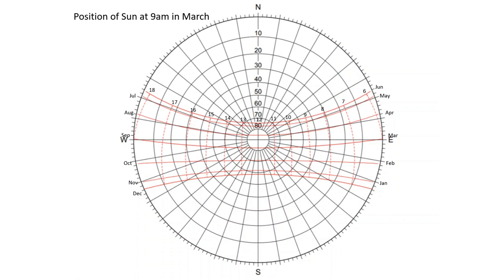Now let's see how to find the position of the sun at 9 am in March. First thing we have to do is find out the path of the sun in the month of March. This is it. And now we have to find the 9 am line. This point is the position of the sun at 9 am in March.